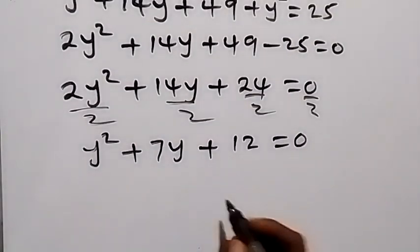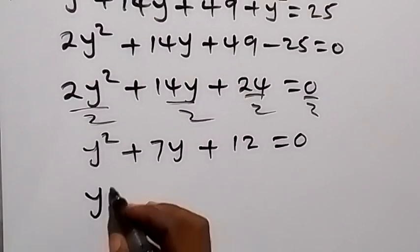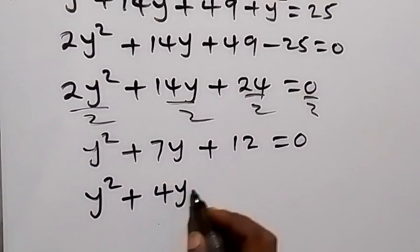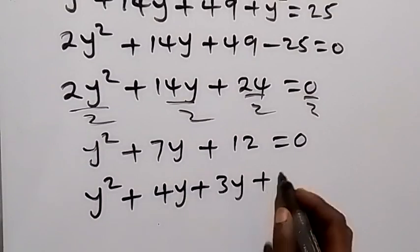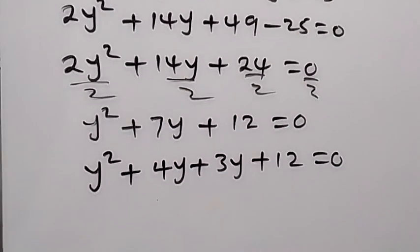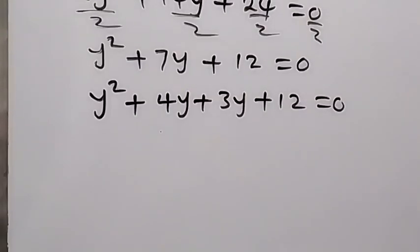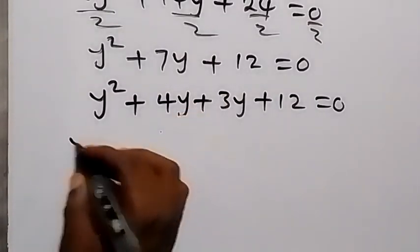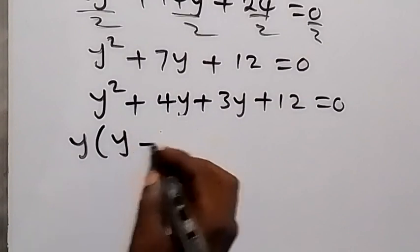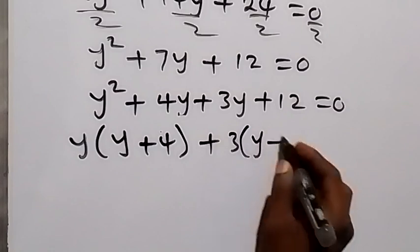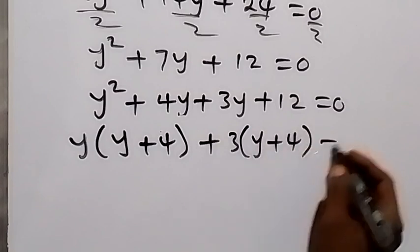We can factorize it and we have y squared plus 4y plus 3y plus 12 equals zero. So we can factorize this. What is common between these two terms is y, so y out, then y plus 4 left, then also we have plus 3 into bracket y plus 4,